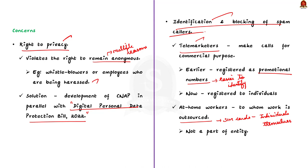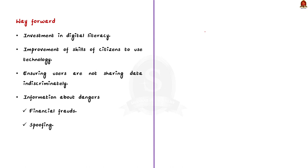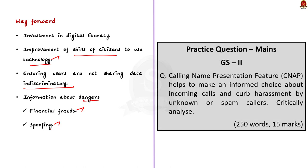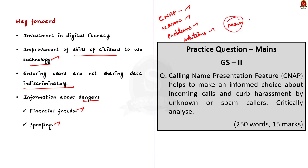The government must invest in digital literacy and skill citizens to navigate and use technology better. It should be ensured that users do not share their data indiscriminately. Users should also be informed about dangers such as financial frauds and spoofing. In this discussion we saw about the calling name presentation feature, the reasons it is introduced, the problems associated with it, and some possible solutions. This topic is very important for your mains exam.